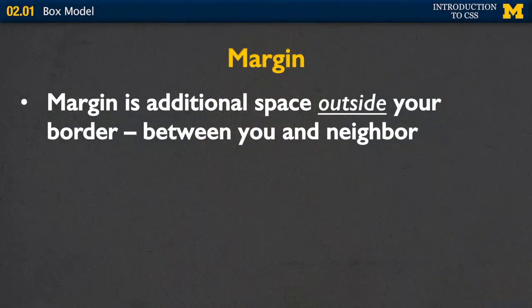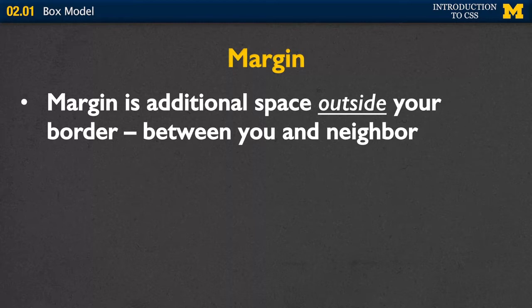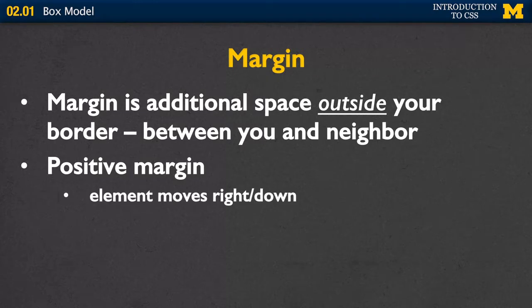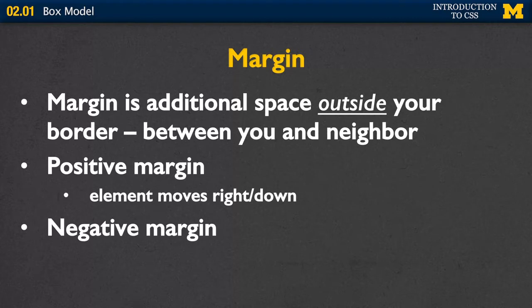Margin is the space that's outside of your border — between the element and its neighbor, giving you that elbow room. A positive margin moves your element to the right or down. A negative margin moves it closer to the neighbor, left or upward.